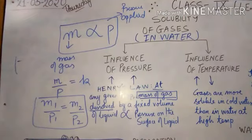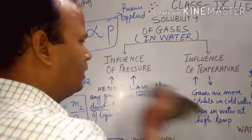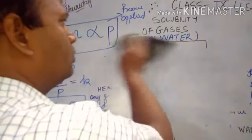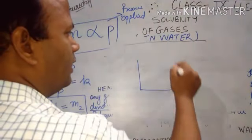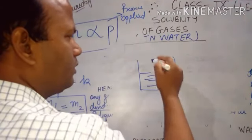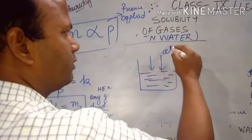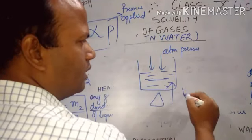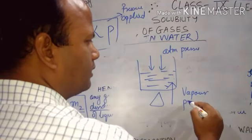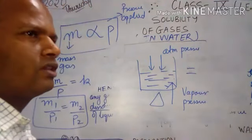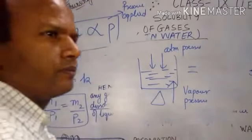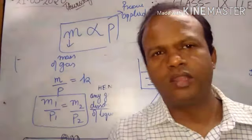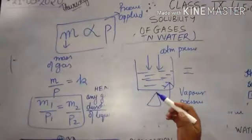Now, one thing we have studied: what about boiling points and freezing points? What happens to the boiling point and freezing point? The boiling point is the temperature at which the vapor pressure becomes equal to the atmospheric pressure. When we increase the external pressure on the surface of the liquid, the boiling point increases, and there is a vice versa in the case of freezing point.